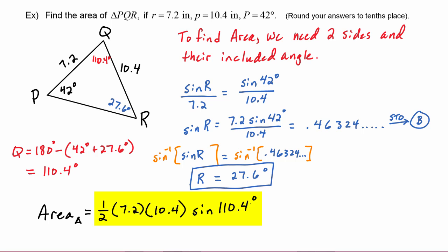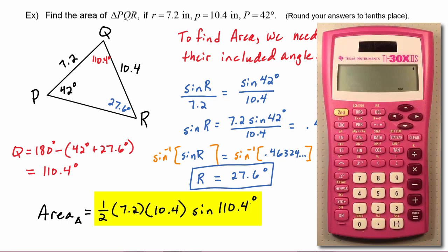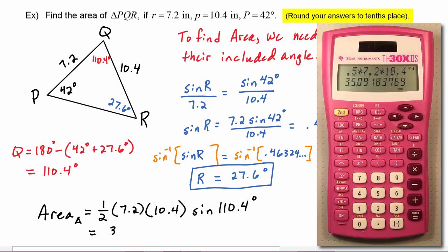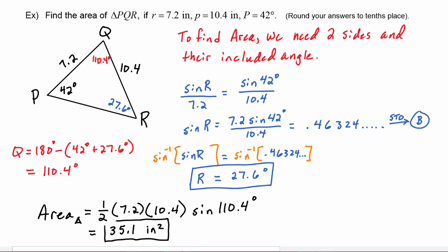Go ahead and enter that in your calculator and enter. We can either do one half or you can use 0.5, it's your choice. If we take 0.5 times 7.2 times 10.4 times the sine of 110.4, hit enter, we find out that the area is approximately equal to 35.1 rounded to the tenths place there, and our units, since it's area, we know has to be inches squared.